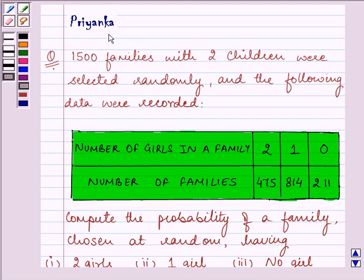Hello and how are you all today? My name is Priyanka. The question to be discussed is: 1500 families with 2 children were selected randomly and the following data were recorded. The number of girls in a family are 2, 1, 0 respectively, and the number of families is...